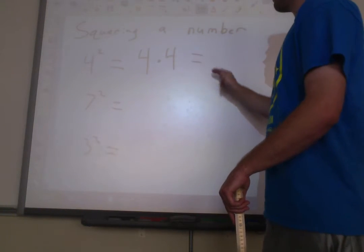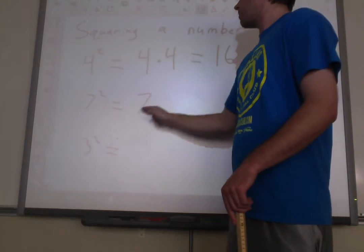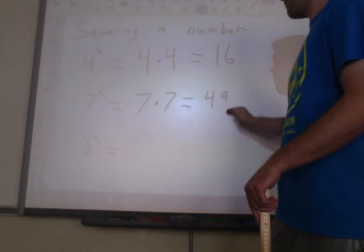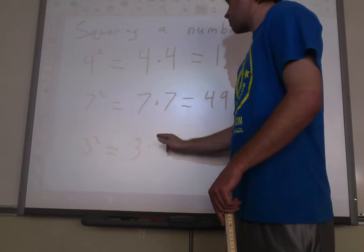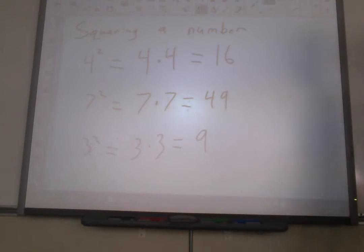So it's 4 times 4, which equals 16. 7 squared would be 7 times 7, which equals 49. 3 squared would be 3 times 3, which equals 9. Okay, so squaring a number.